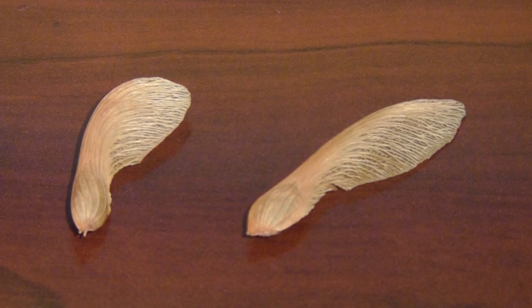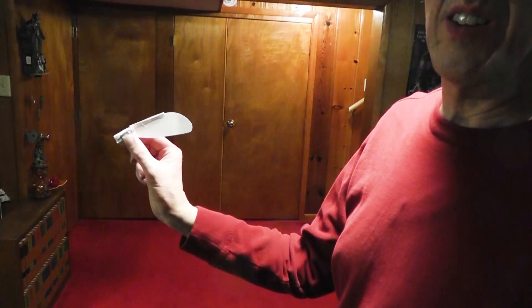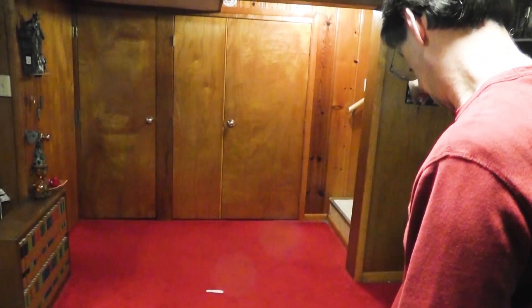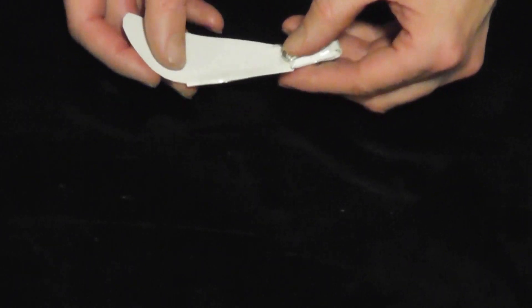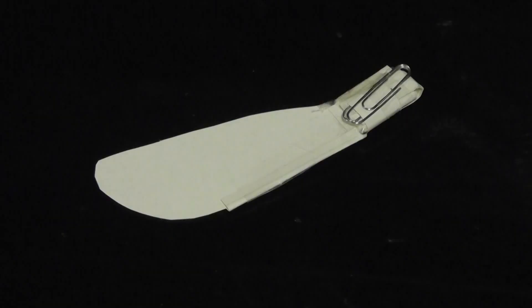The seeds of some trees have a wing to spin like an autogyro. You can imitate this with paper if you are patient. You need to duplicate the shape, curvature, and balance. It spins around the seed as it falls, so it has to balance there, meaning almost all the weight is in the seed.